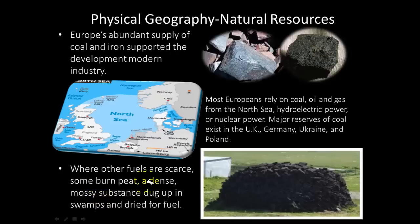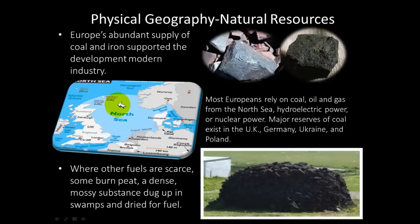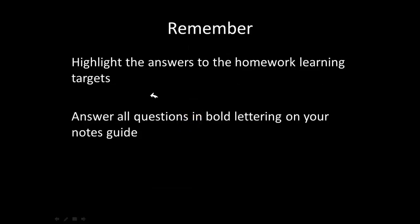In parts of Europe where coal, oil, and gas are scarce, people burn peat — a dense, mossy substance found in swamps. It is dug up, dried out, and burned as fuel. Countries along the North Sea also rely heavily on hydroelectric power. Remember to highlight answers to the homework learning targets on your notes guide and answer all bold-lettered questions for full credit.